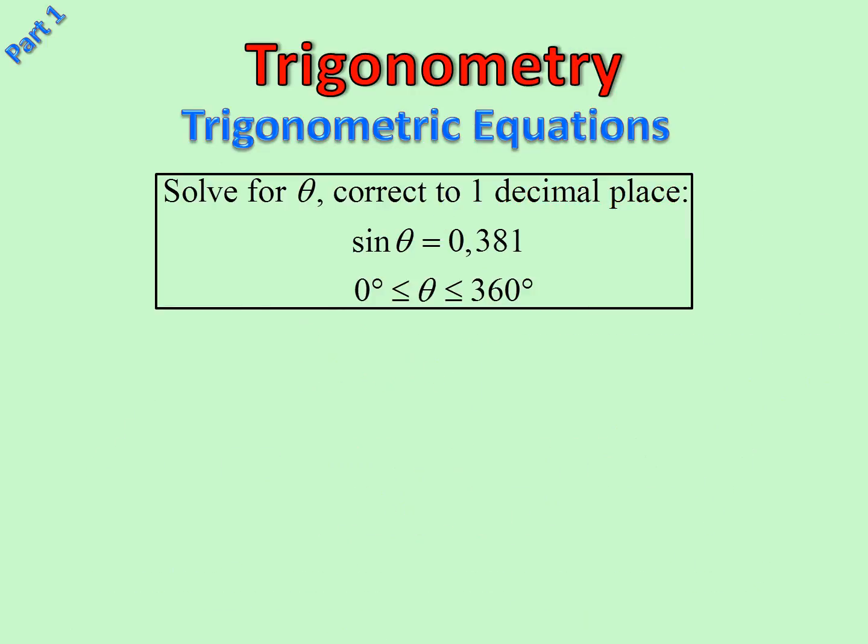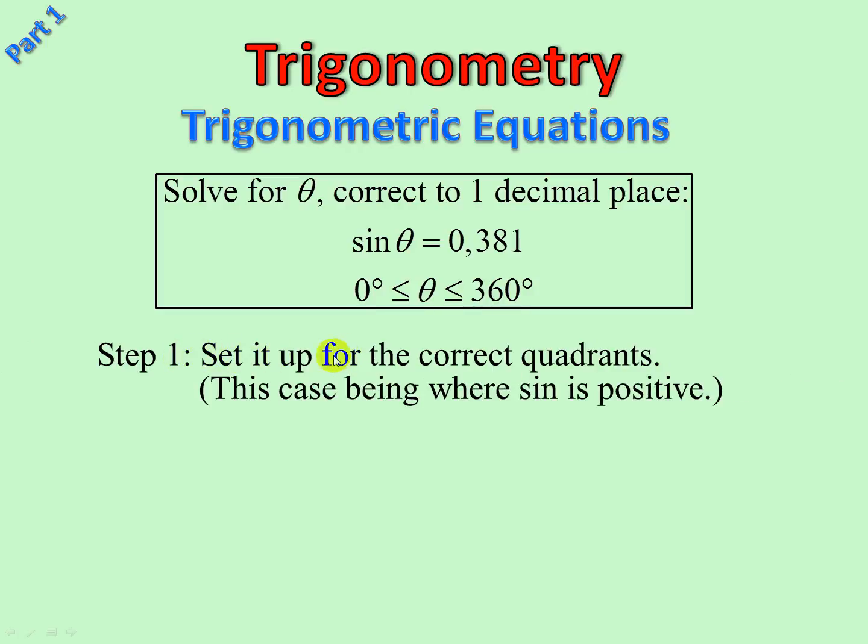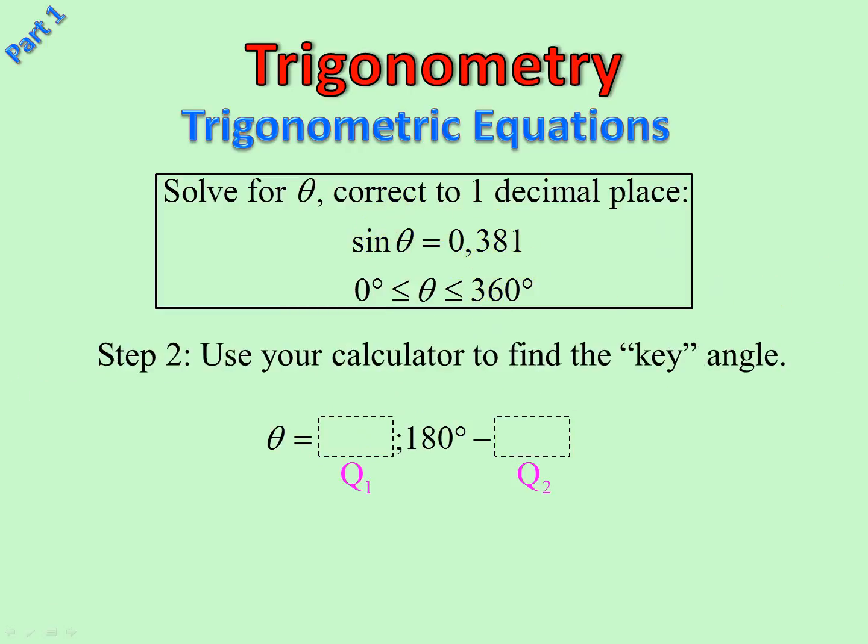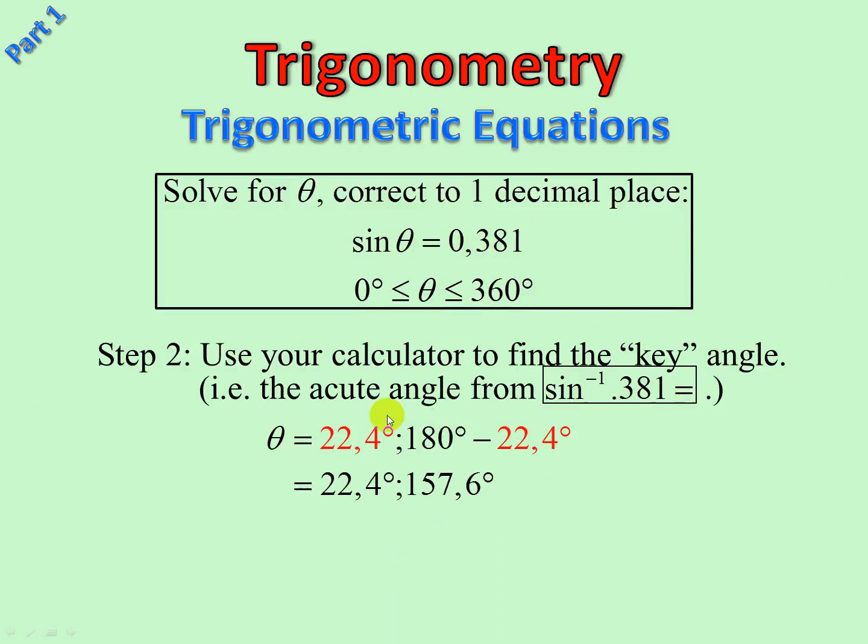So let's now consider this one. Solve for θ correct to one decimal place: sin θ = 0.381, 0° ≤ θ ≤ 360°. Step one: set it up. You're going to hear me saying 'set it up' quite often for the correct quadrants. This being where sin is positive, I write θ equals [blank] and 180° minus [blank] before I even touch my calculator. Now I can use my calculator to find the key angle by doing sin⁻¹(0.381). There we are. Slot my answers into my setup, and there are my answers.